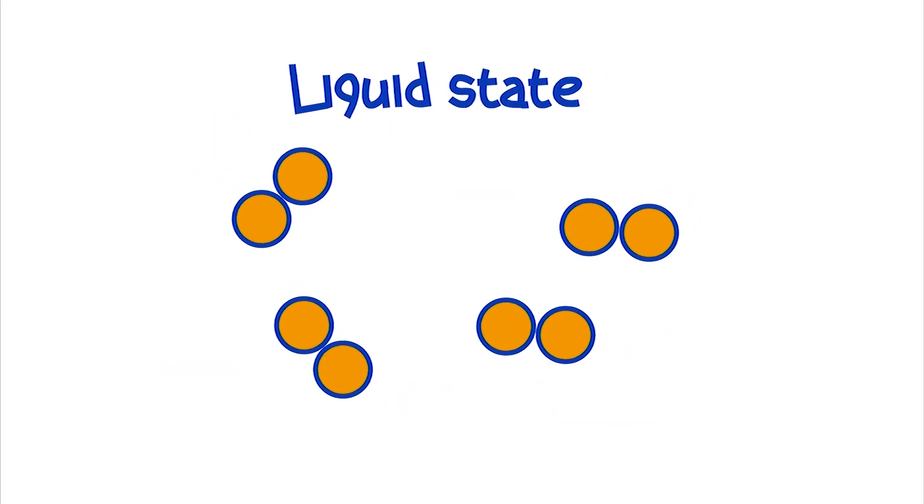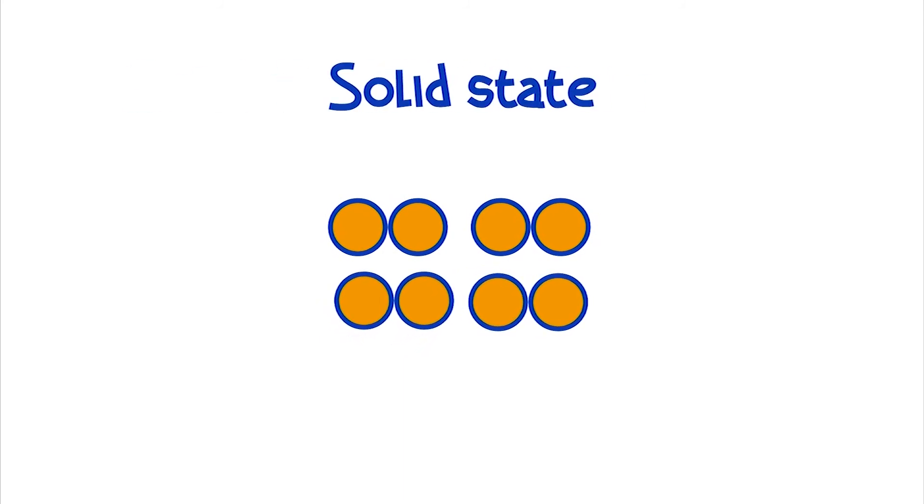When a substance passes into a solid state, it organizes itself so that its molecules occupy a certain order, so that there's a smaller space between them.